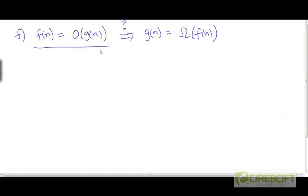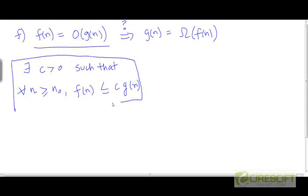So as always, let's start with what's given to us. f is O(g(n)). This means there exists a positive constant c such that for all values of n that are larger than some threshold n₀, f is going to be bounded from above by a constant multiple of g.